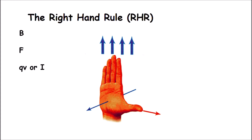First of all, we want to look at the magnetic field, B. When we have field lines, it's a whole bunch of vectors all pointing in the same direction. We use our fingers because we have a lot of fingers and there are a lot of field lines. So we're going to point our fingers in the direction of the magnetic field. The next variable — either current I, or QV — always goes in the direction of your thumb.